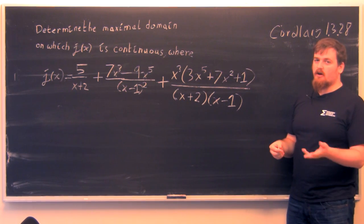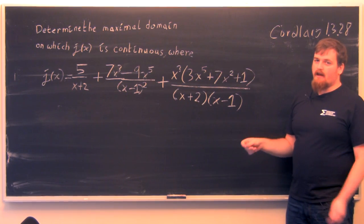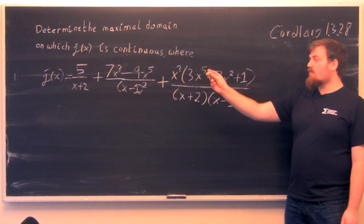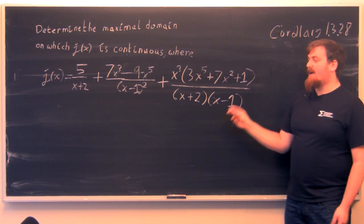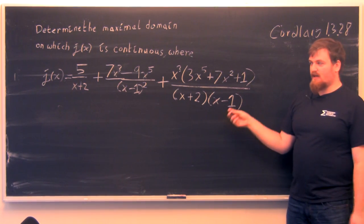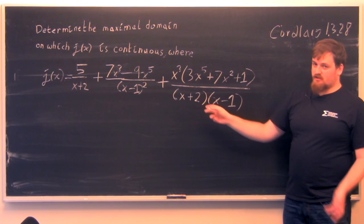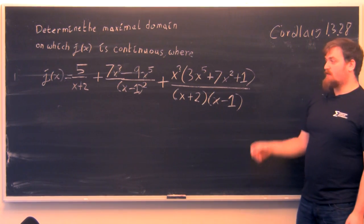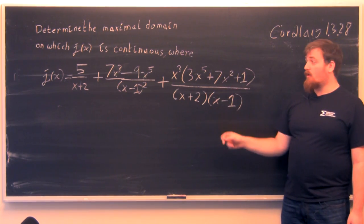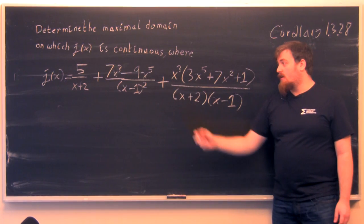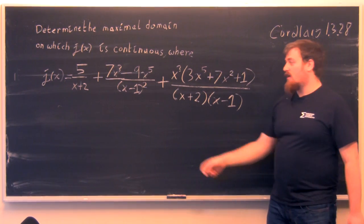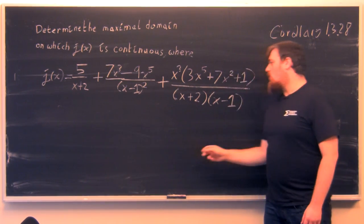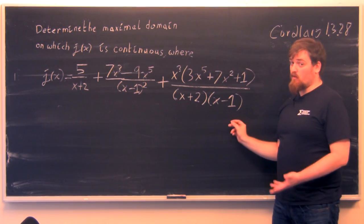Now rational functions are well-defined everywhere that their arguments are well-defined—that is the numerators and denominators—except those places where the denominators become zero. So these are all polynomials, so they're well-defined everywhere, which means that j(x) is only not well-defined where any of these denominators are zero. So that means it's not well-defined where x equals minus 2, where x equals 1, or where x equals either minus 2 or minus 1.